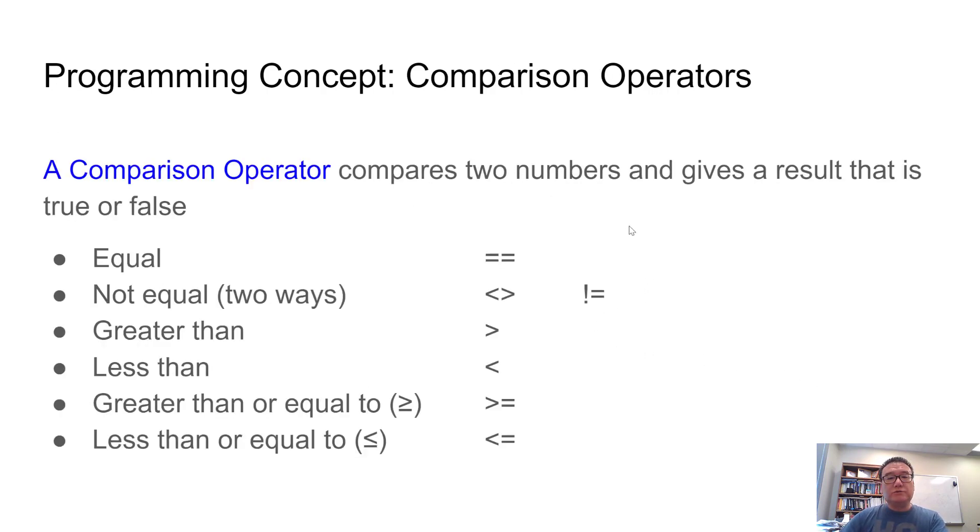In order to be able to check whether the remainder is 0 or not, we need to use a comparison operator. This will compare two numbers and then it will give a result that is either true or false. Technically, this is known as a Boolean value. But for us, it's really just a value that can be either true or false. I think that intuitively makes sense.